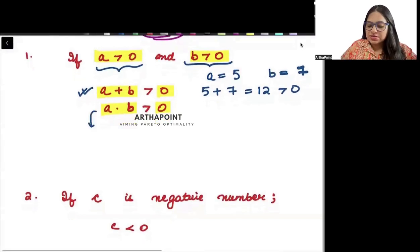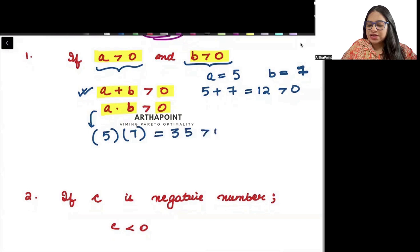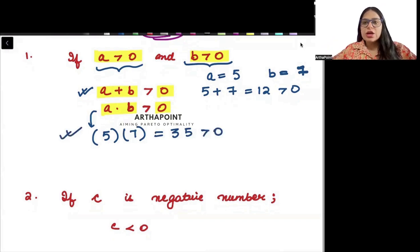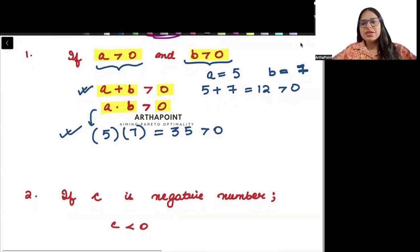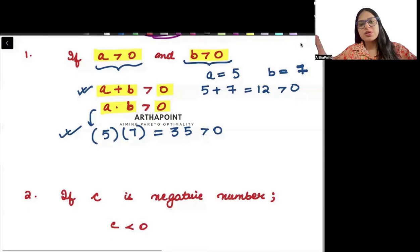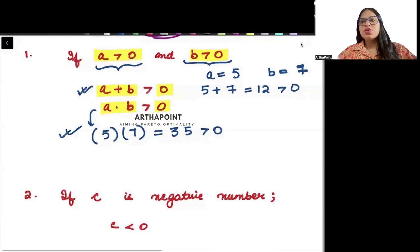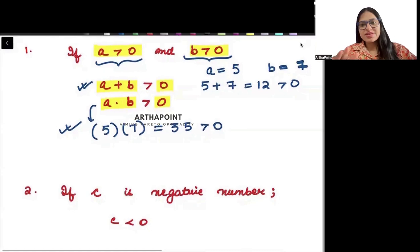Now look here. a is 5, into 7 — that is 35. And 35 is greater than 0. So if a is greater than 0 and b is greater than 0, then a plus b will also be greater than 0 and a into b will also be greater than 0.